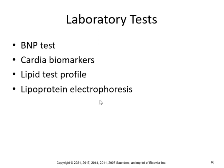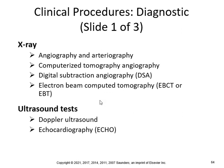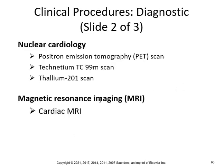Lab tests include the BMP test, cardiac biomarkers, lipid profile test, and lipoprotein electrophoresis. Imaging tests include angiography, arteriography, CT scan, digital subtraction angiography (DSA), and electron beam computed tomography (EBCT). Ultrasound tests include Doppler and echocardiography. Nuclear cardiology includes PET — positron emission tomography — technetium Tc-99, and thallium-201.